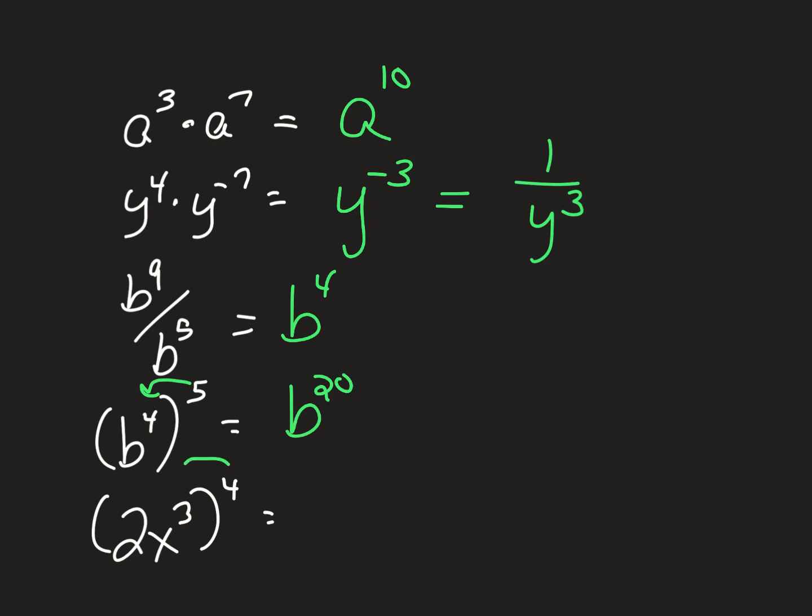And finally, an exponent outside of parentheses goes for everything. So I'm going to raise two to the fourth power, and the x cubed to the fourth power. Two to the fourth power. Everybody knows it's sixteen. x cubed to the fourth power. You would multiply those two exponents because it's inside and outside. Sixteen x to the twelfth.